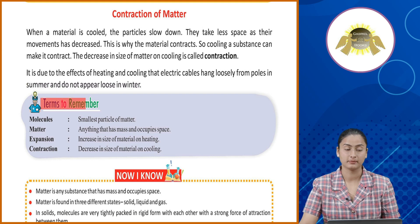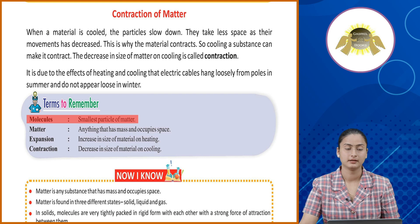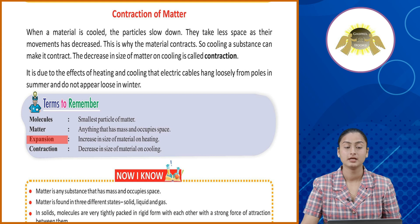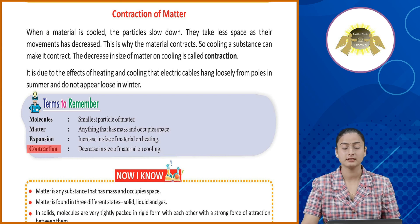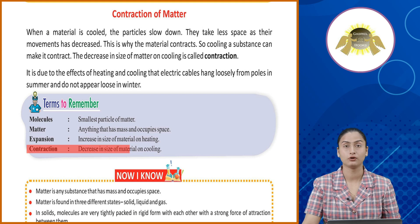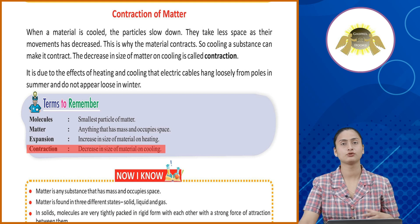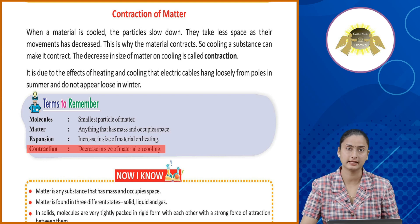Terms to remember. Molecules: smallest particle of matter. Matter: anything that has mass and occupies space. Expansion: increase in size of material on heating. Contraction: decrease in size of material on cooling. Toh yeh kuch important terms teh jinko hum ne abhi chapter mein kaafi detail mein padha.